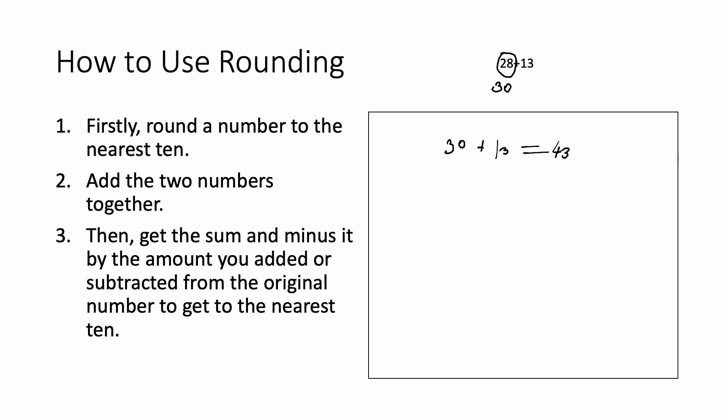Then get the sum and minus it by the amount you added or subtracted from the original number to get to the nearest 10. The original number, instead of 30, was 28. And it takes two numbers to get to 30.